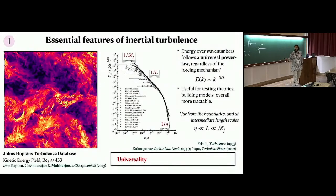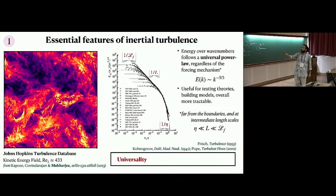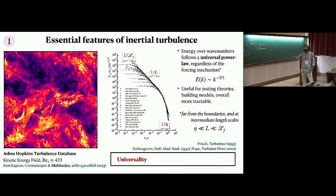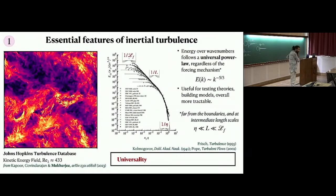The first aspect is universality. This snapshot from the Johns Hopkins turbulence database shows the kinetic energy field with all kinds of structures. The key point is that the distribution of energy over wave numbers follows a universal distribution going as K^(-5/3). This only holds when you're far from the injection scales and far from dissipation, but in the intermediate range you can have universal scaling — and you see that experiments fall on top of each other in this range.